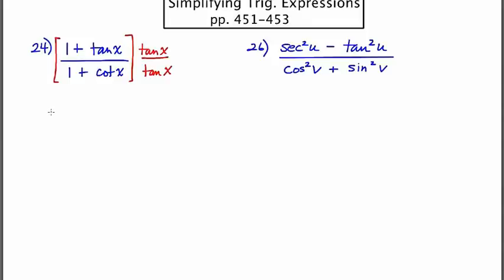So in the numerator, when I distribute tan x into one plus tan x, you get an expression, but I think I'm going to choose to leave it in a non-distributed form. So I'm going to have one plus tan x times tan x. So it's the product of the two things on top. Downstairs, I'm going to distribute tan x times one is tan x. Tan x times cotan x is something times its reciprocal, and that's one.